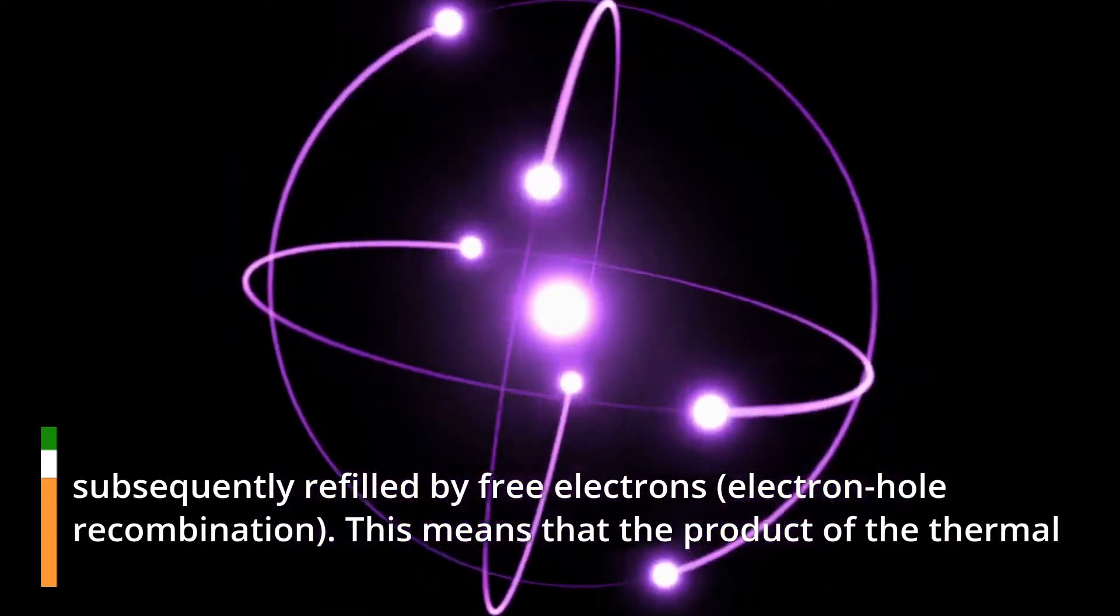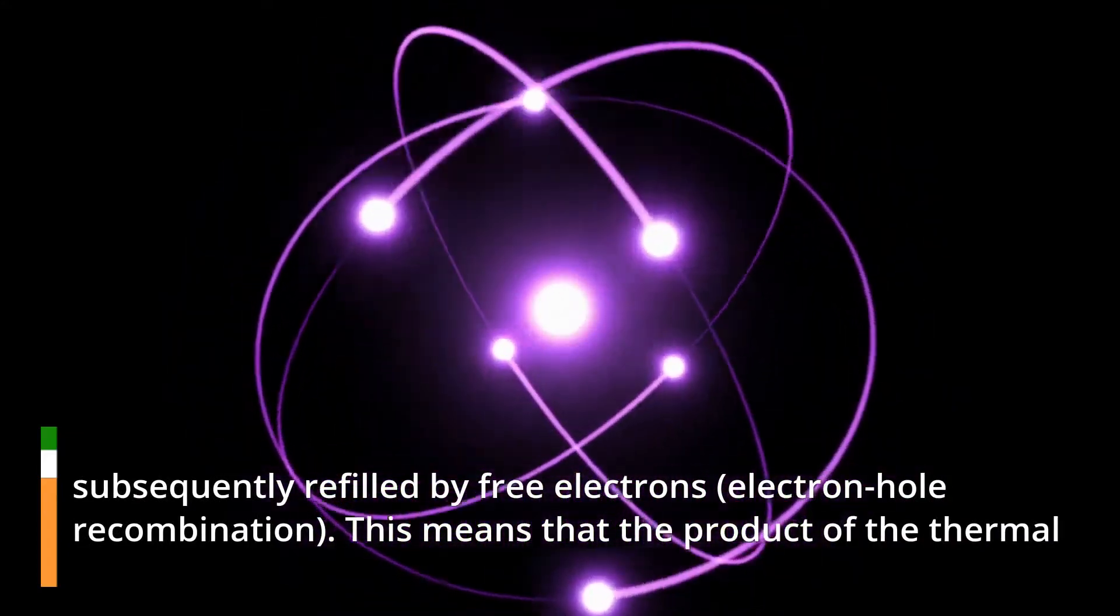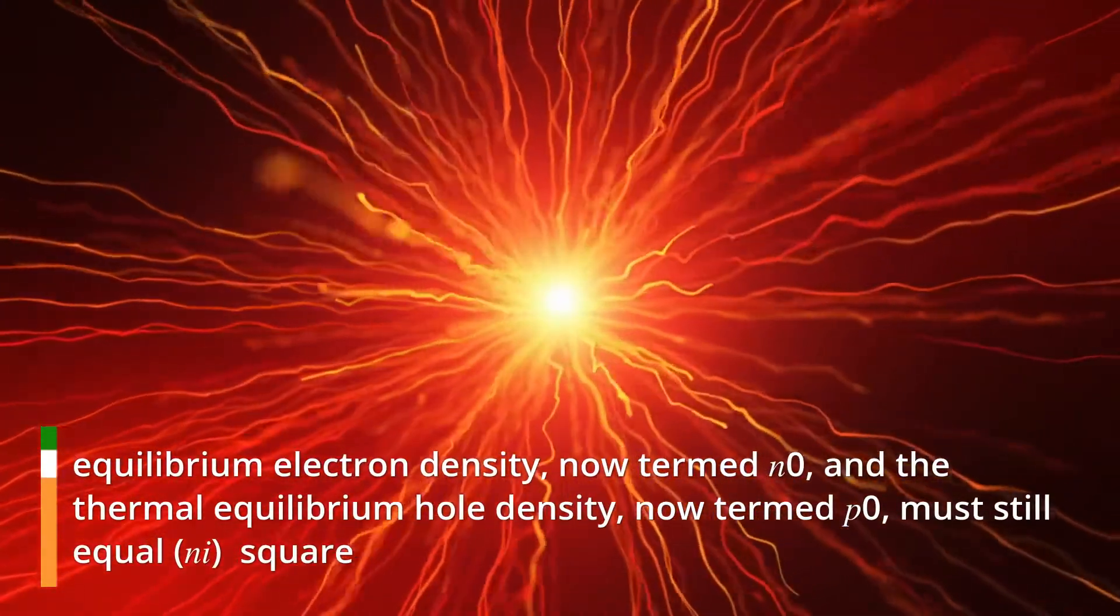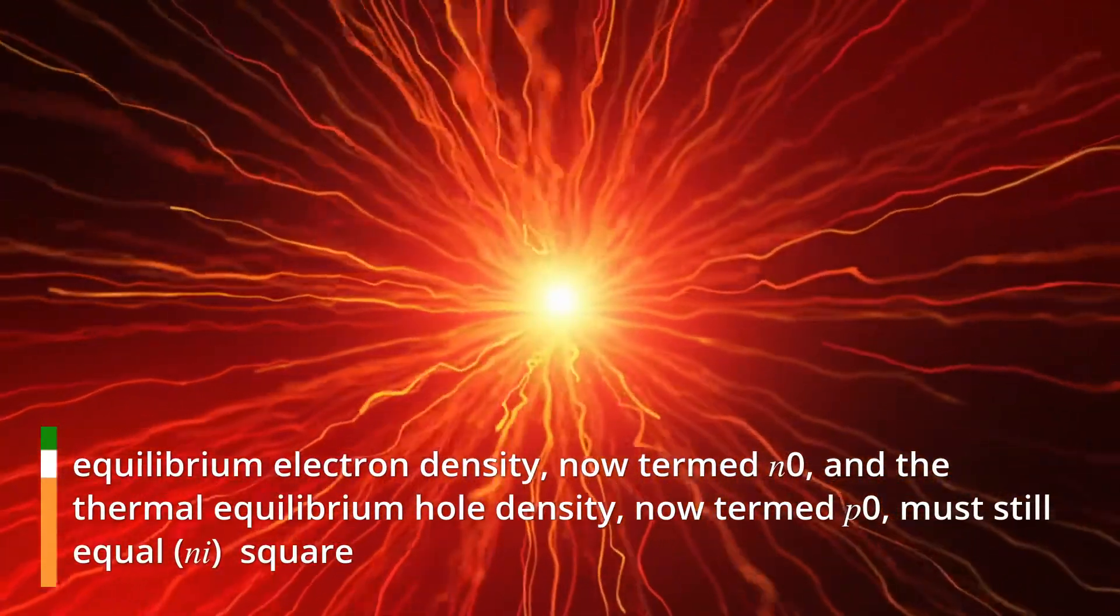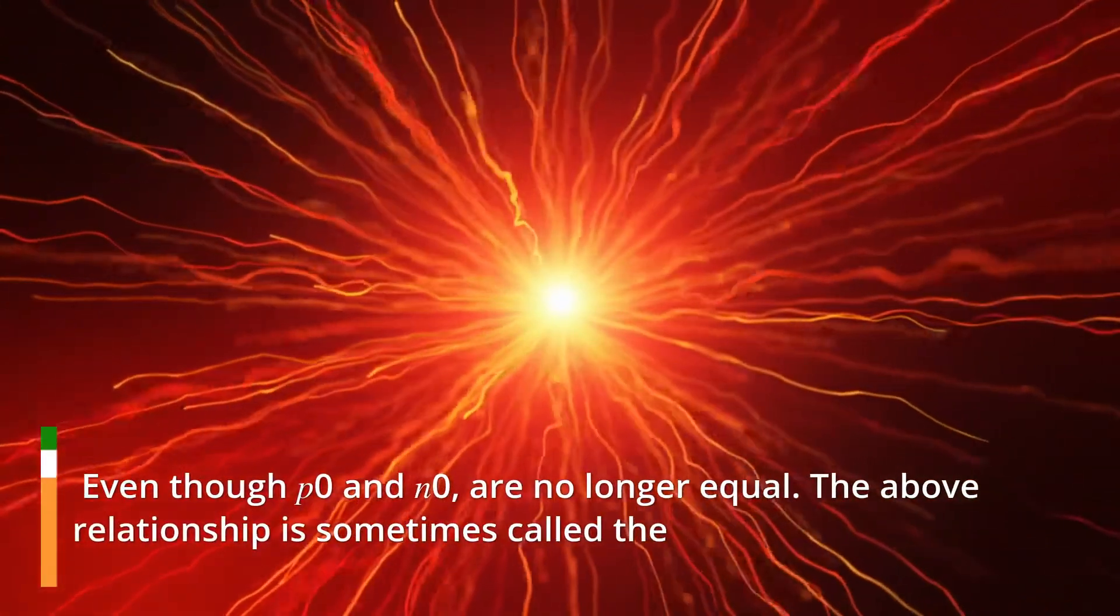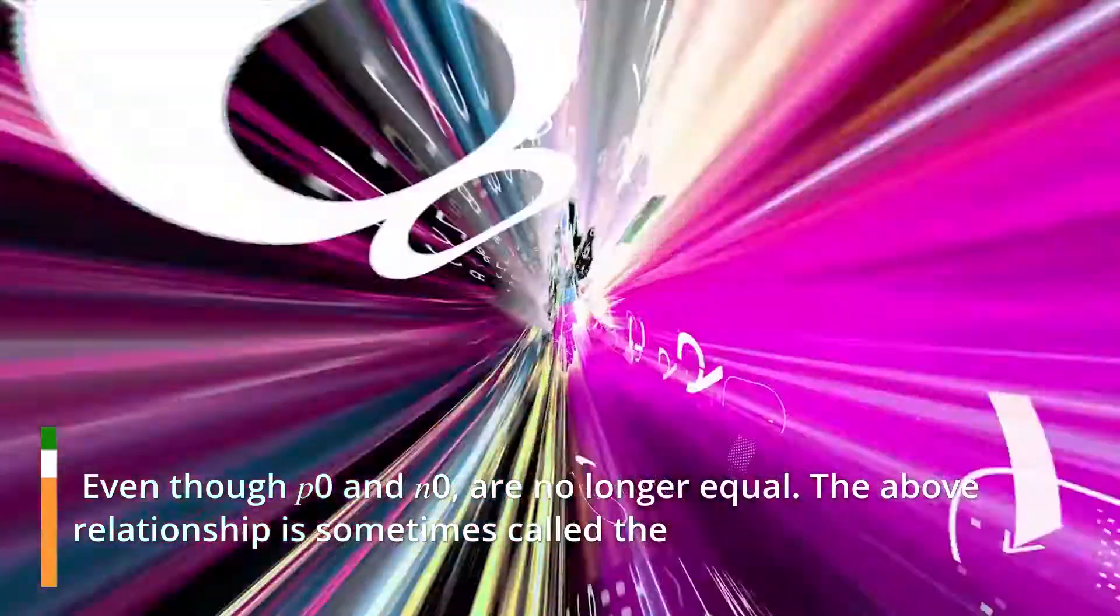This means that the product of the thermal equilibrium electron density, now termed N0, and the thermal equilibrium hole density, now termed P0, must still equal Ni squared, even though P0 and N0 are no longer equal.